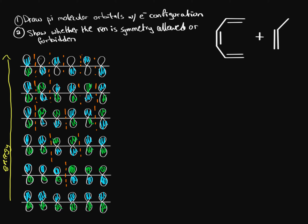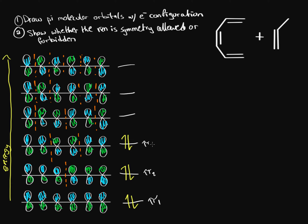We have six electrons in hexatriene occupying the pi orbitals. They fill the lowest energy orbitals first: two paired in the first, two in the second, two in the third. The upper three remain empty. We label them pi 1, pi 2, pi 3 as the bonding orbitals, and pi 4*, pi 5*, pi 6* as the anti-bonding orbitals.